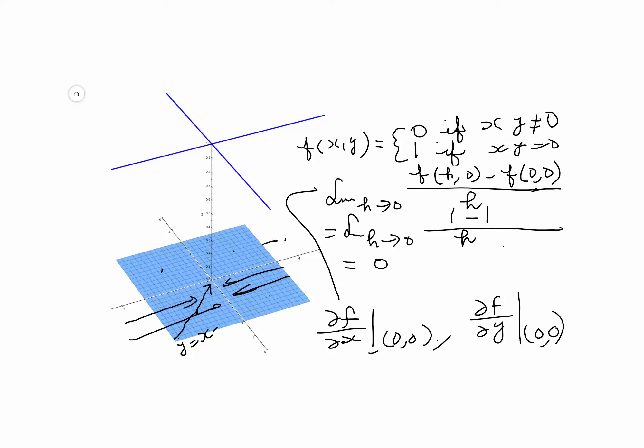the partial derivative with respect to x is 0. And similarly, that with respect to y is 0. So what did you see in this case? The partial derivatives do exist, but the function is still not continuous at (0, 0).